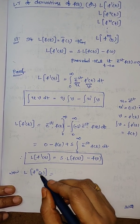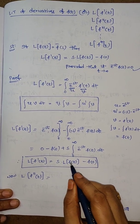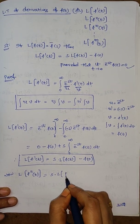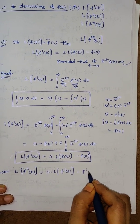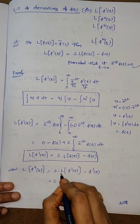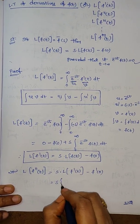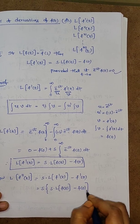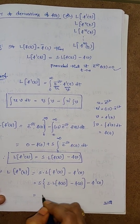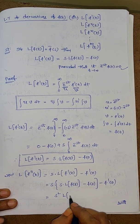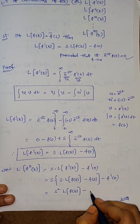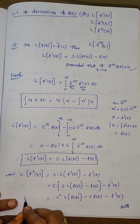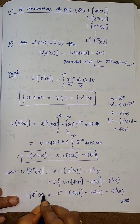By the above result, L{f'(t)} = s·L{f(t)} - f(0). So L{f''(t)} = s·L{f'(t)} - f'(0). Substituting the expression for L{f'(t)}, we get s times [s·L{f(t)} - f(0)] minus f'(0). This simplifies to s squared times L{f(t)} minus s times f(0) minus f'(0). This is the Laplace transform of f double dash of t.